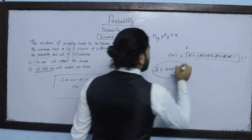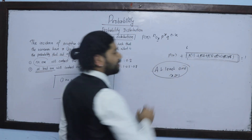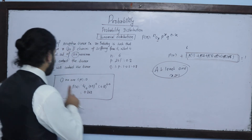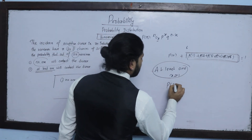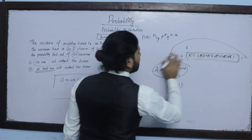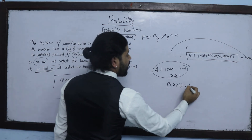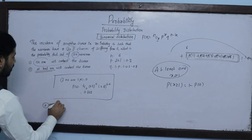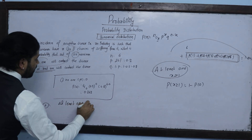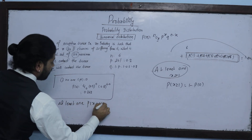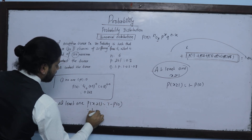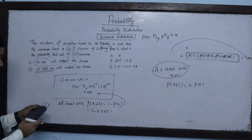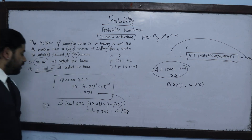The total probability is 1. At least 1 means P(X ≥ 1) equals 1 minus P(X = 0). So, P(at least 1) equals 1 minus P(0), which equals 1 minus 0.262, giving approximately 0.738.